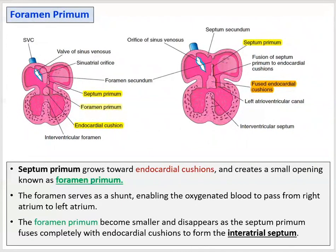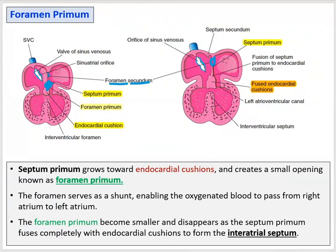While the foramen primum closes, there is a kind of fenestration created higher up to create another foramen. The foramen primum becomes smaller and closes, and a larger foramen opens in the septum primum wall. This second foramen is known as foramen secundum — not foramen primum, but foramen secundum. Both foramina — primum and secundum — are located in the septum primum.